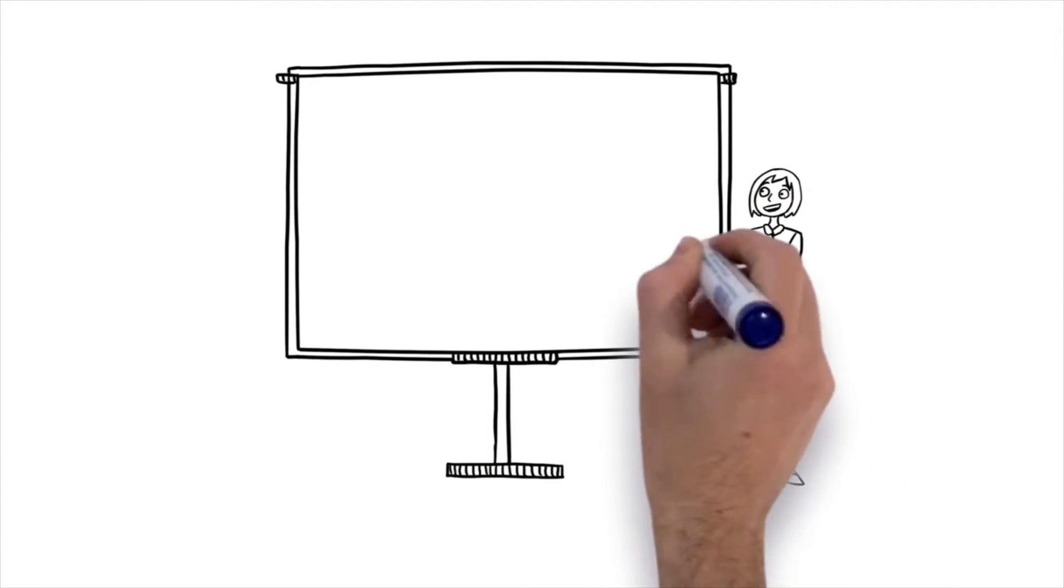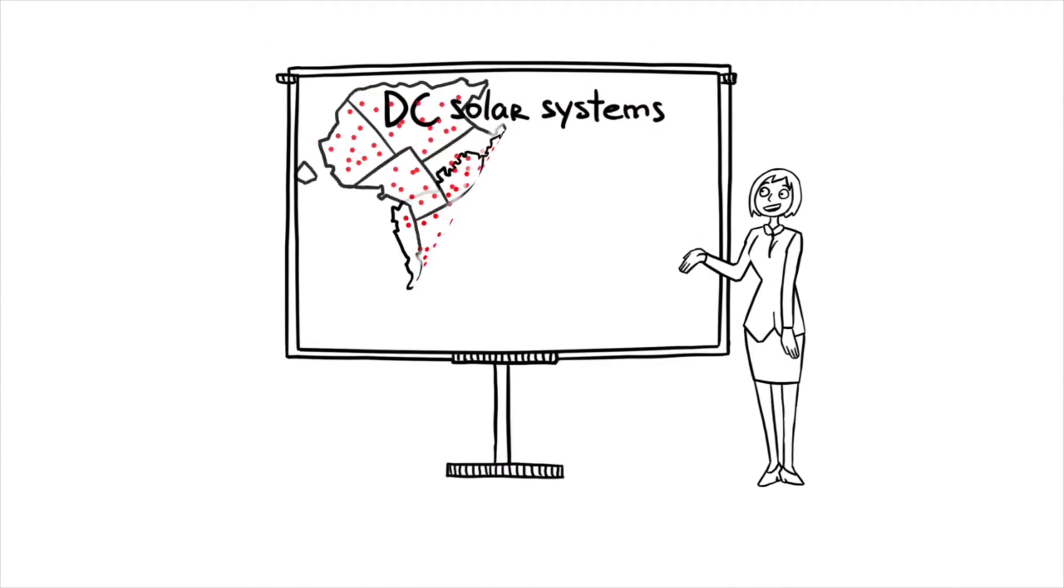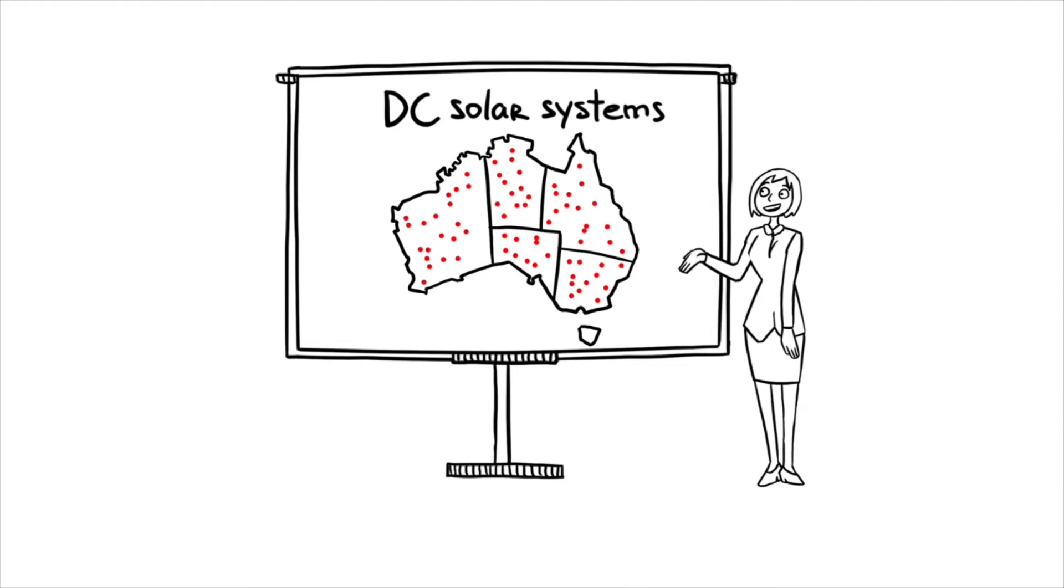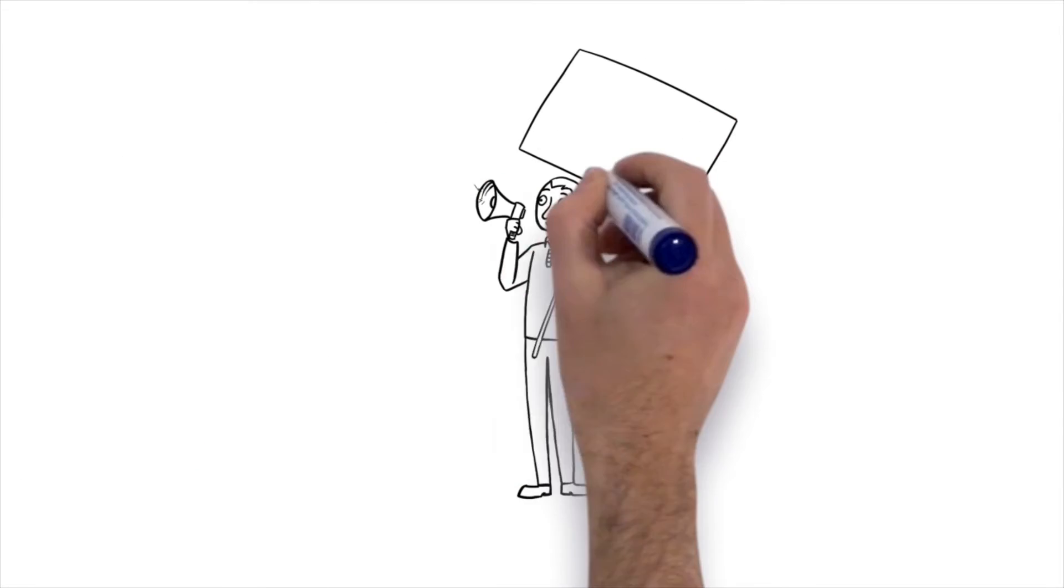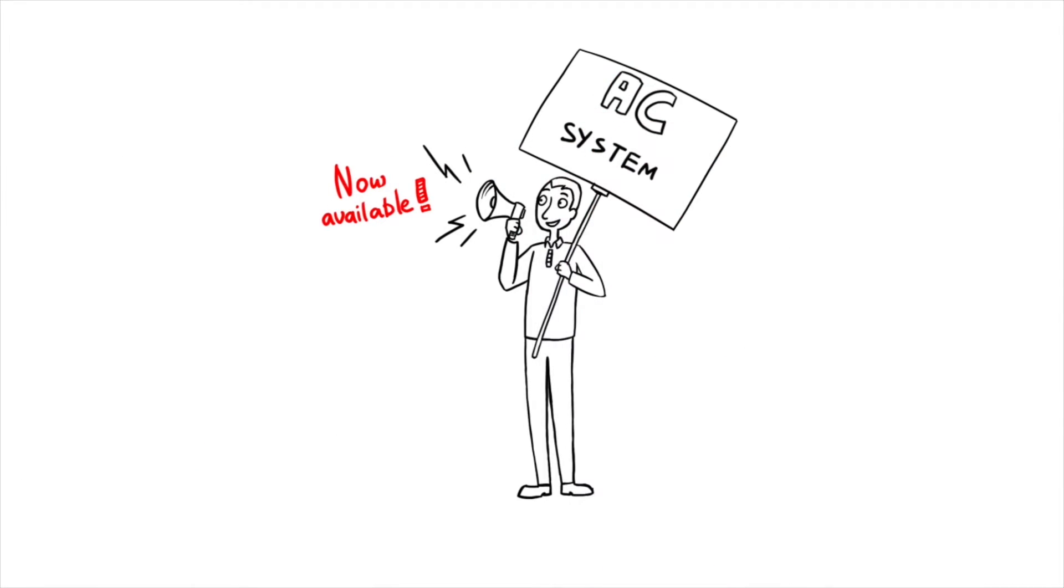In the past virtually all solar systems installed around Australia were configured as DC systems. But that's all changing now that AC solar technology is available.